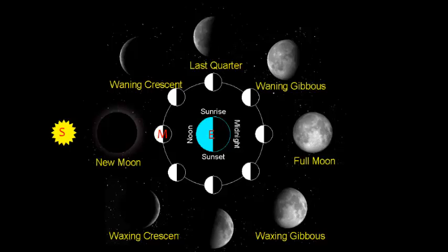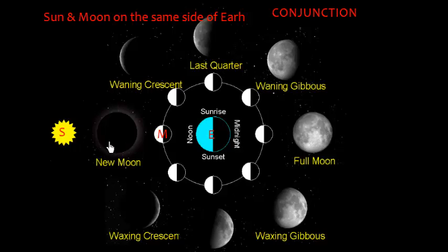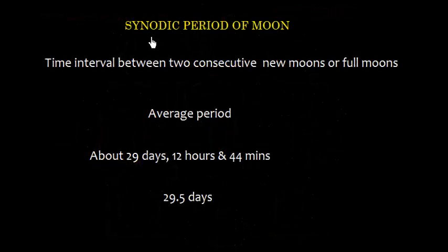When the Sun and Moon lie in the same line on the same side of Earth, we say the Sun and Moon are in conjunction. At this time, since only half of the Moon is illuminated, the dark hemisphere is visible from Earth. The time period from new moon to new moon is called the synodic period of the Moon.